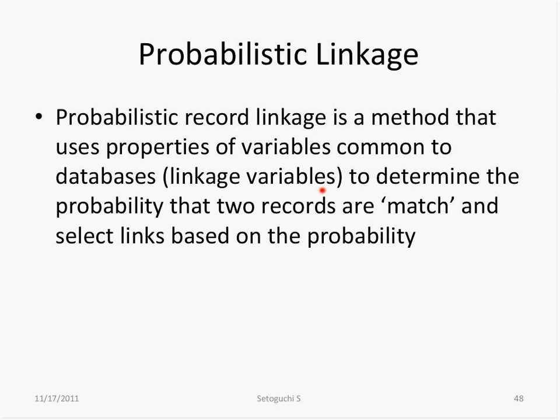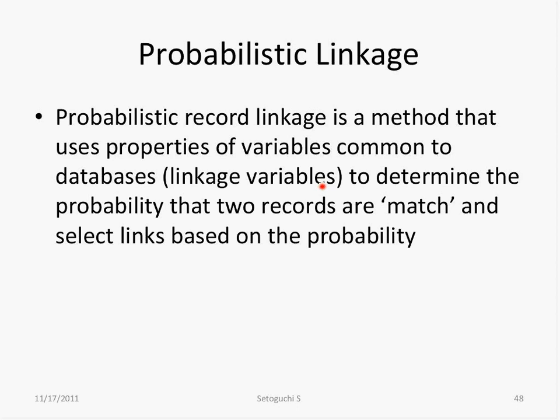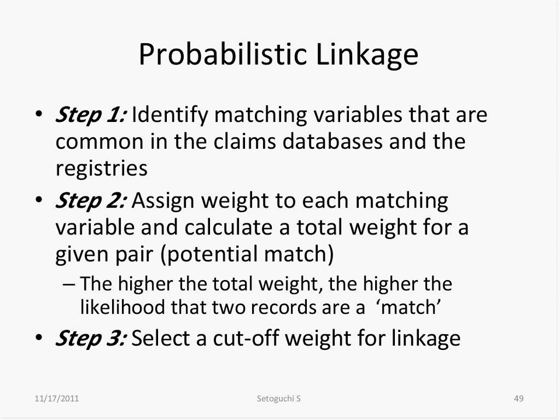Probabilistic linkage is a method that uses properties of variables common to databases — called linkage variables — to determine the probability that two records are matched, and selects links based on that probability. The three steps are: (1) identify matching variables common to both files; (2) assign weights to each matching variable and calculate total weight for all possible pairs; and (3) select a cutoff weight for linkage. Blocking variables like provider ID are often used to limit comparisons within a block.